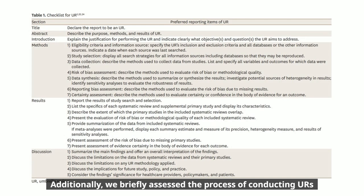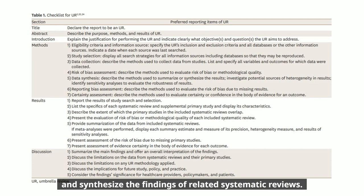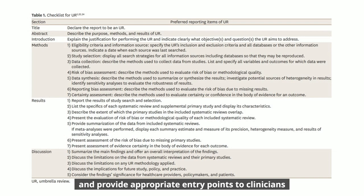Umbrella reviews are used to integrate, evaluate, and synthesize the findings of related systematic reviews. By organizing and summarizing the abundant information in accordance with the level of evidence, umbrella reviews can serve as a useful methodological tool and provide appropriate entry points to clinicians or decision-makers in the medical field.